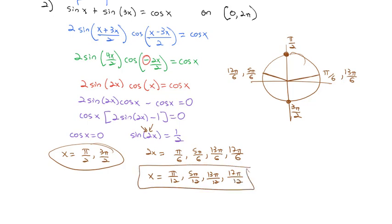Now we have six solutions for x in this original problem. All of it was made possible because we have a formula that can change a sum to a product. We're often looking to see what property we can use to make a problem easier to solve and work with.